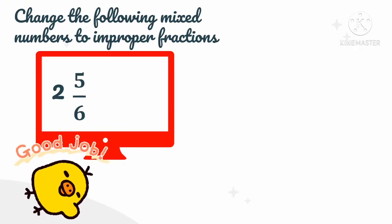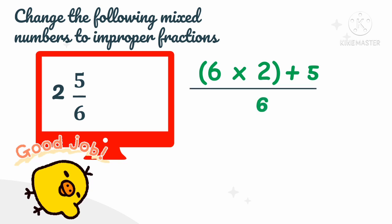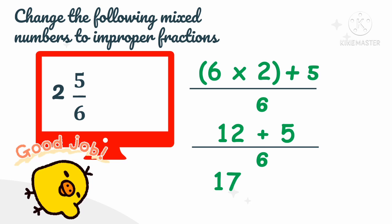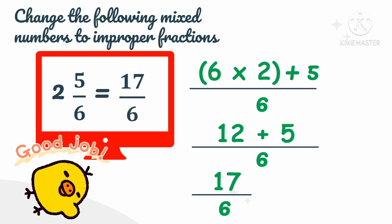How about 2 and 5 over 6? Let's change this by multiplying the denominator by the whole number — 6 times 2 — then add the numerator and copy the denominator. Simplifying: 6 times 2 is 12, plus 5 is 17 over 6. Therefore, 2 and 5 over 6 when changed to an improper fraction becomes 17 over 6.